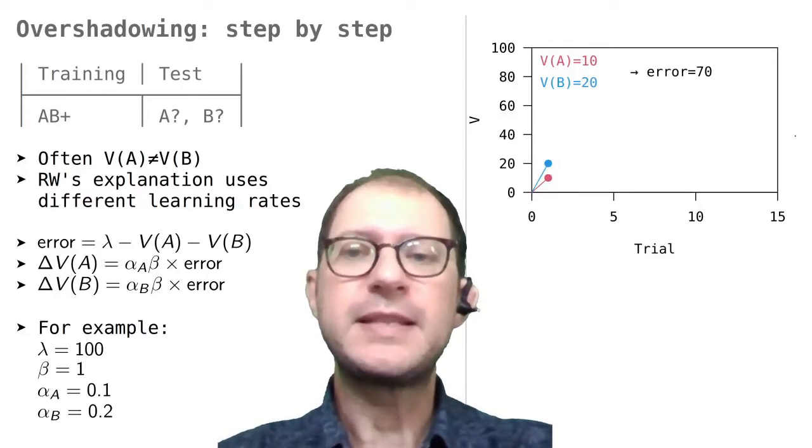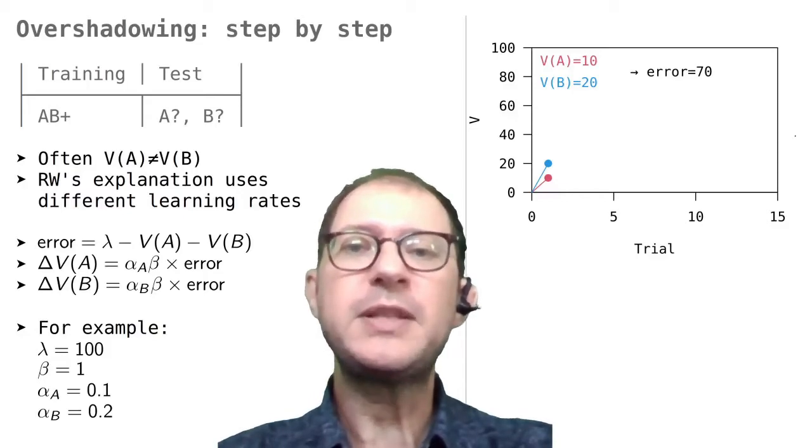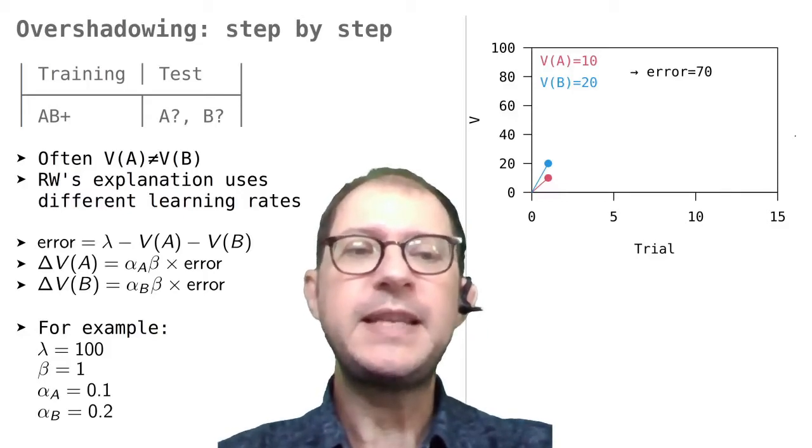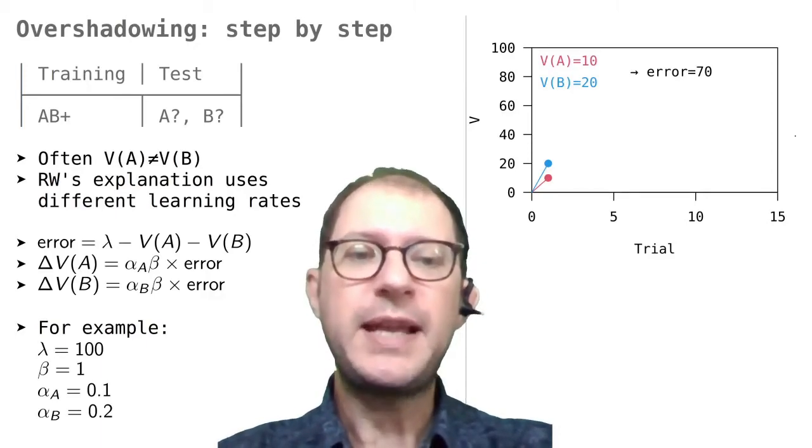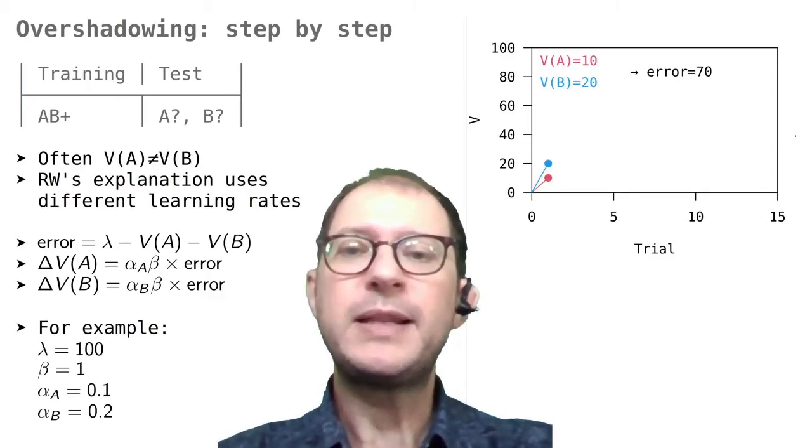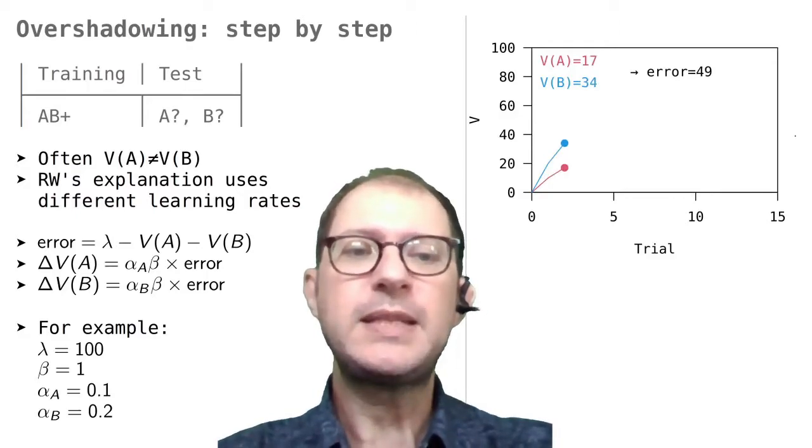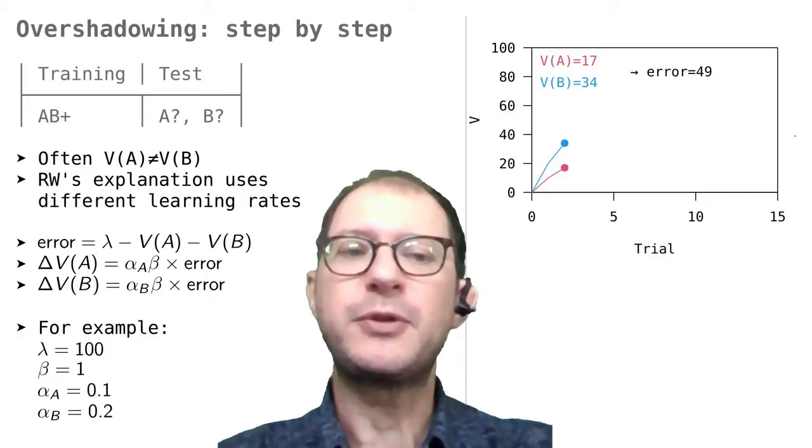Now the value of the error is 70, because it's 100 minus 10 minus 20, and remember that both stimuli are seeing the same error. So the next update will be 0.1 times 70 for A, and this is 7, and 0.2 times 70 for B, and this is 14.